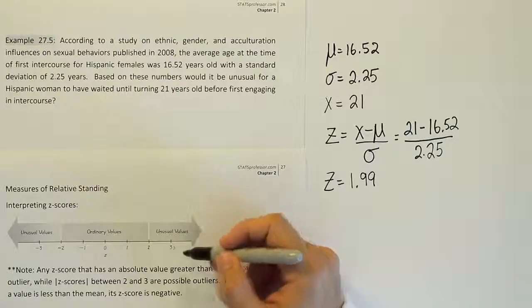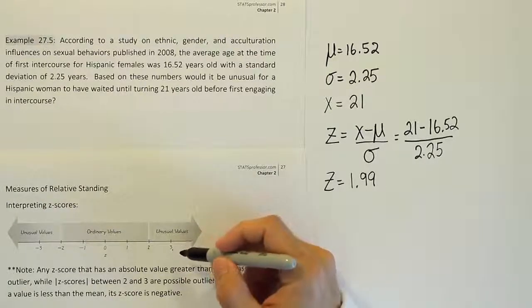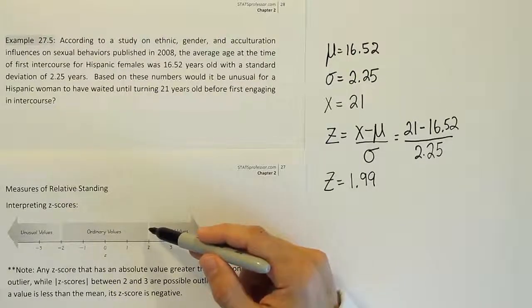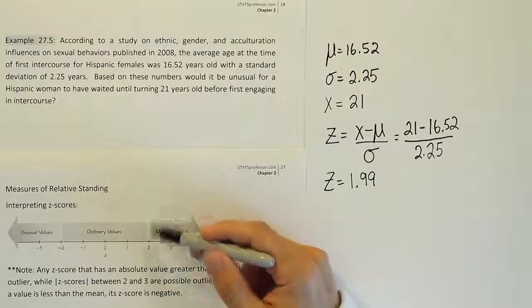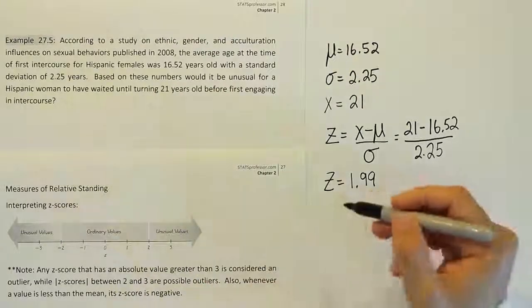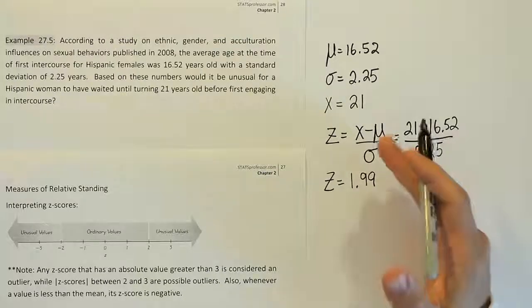Something that's 3 is unusual. But depending on the distribution of the data, something that's only two standard deviations isn't necessarily highly unusual. So 1.99 will still classify as being ordinary.